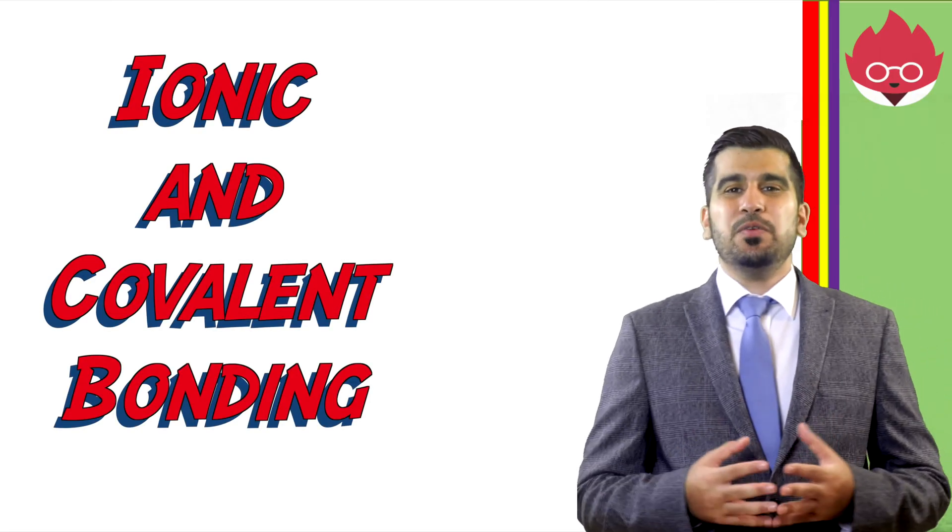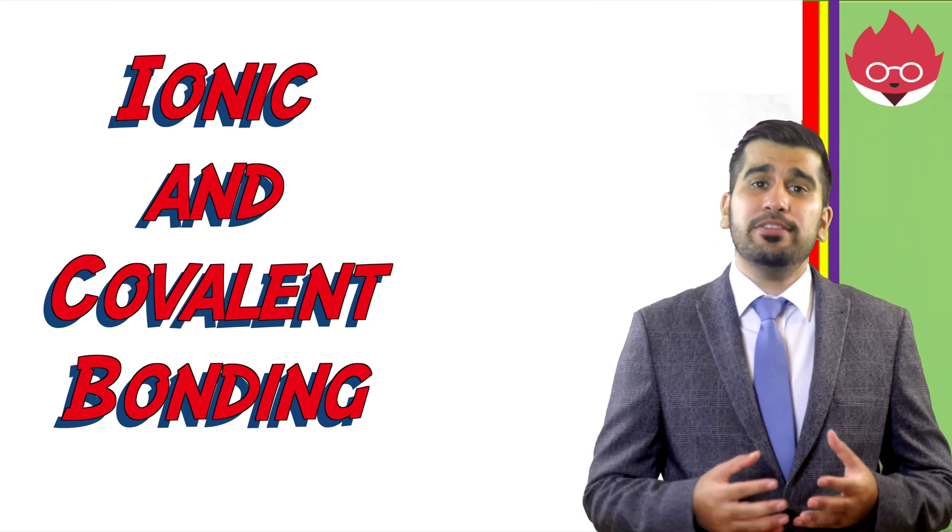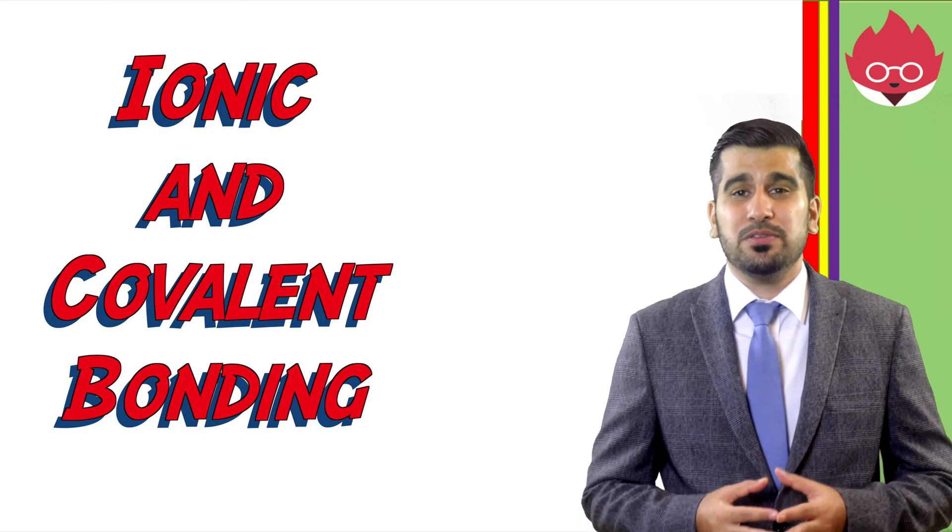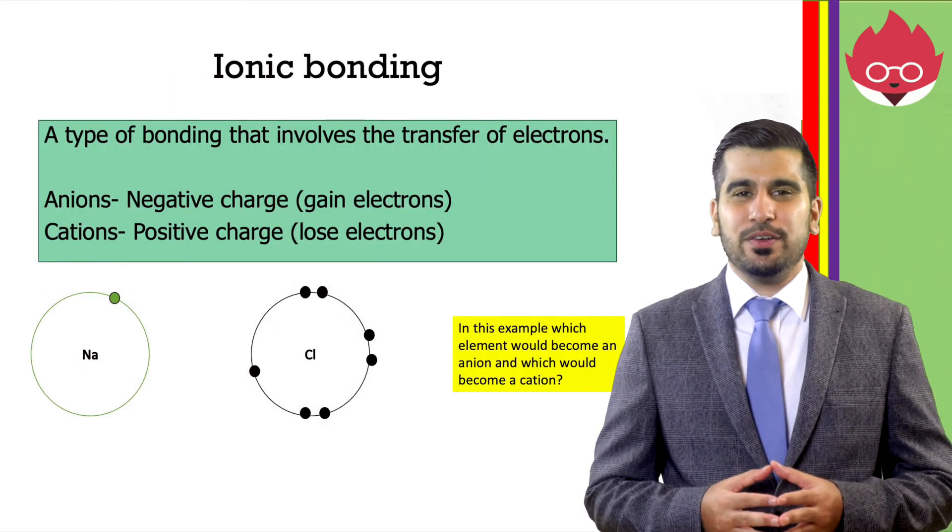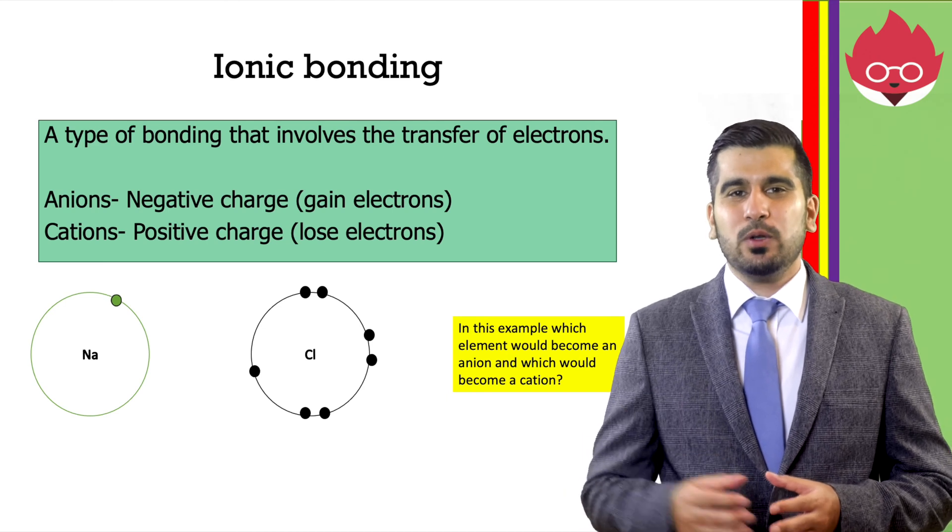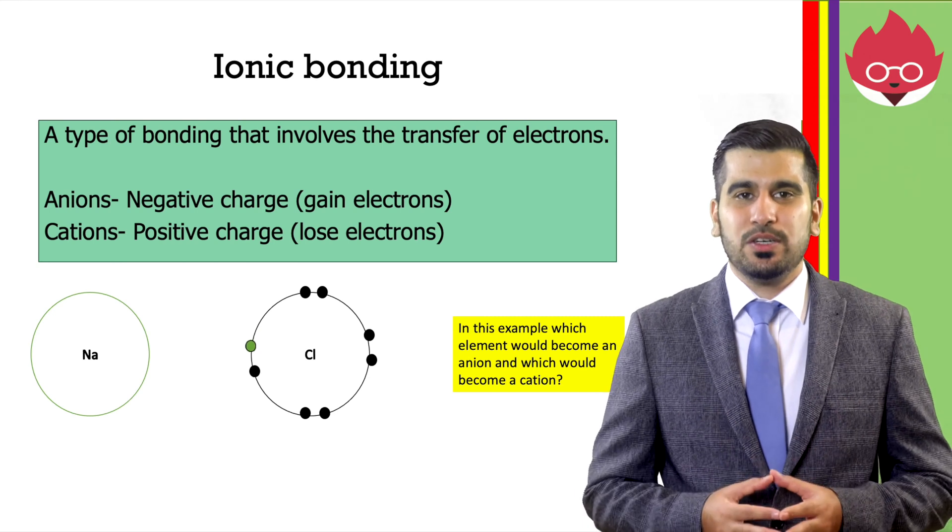During Key Stage 4 chemistry, you would have learned a lot about ionic and covalent bonding, which we'll briefly go over before looking at the structure of water. During ionic bonding, we see a transfer of electrons. In this example, sodium chloride, the sodium donates one electron to chlorine, which completes its outer shell.